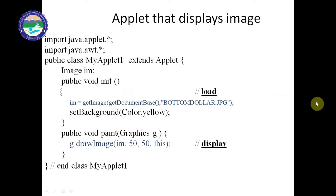This is the program related to image loading and displaying the image. You can see step number one to load the image and step number two to display the image. The program starts with import java.applet.* and import java.awt.*. We always write these two import statements for Java applet programs. Then we write public class MyApplet1 which is extended by the Applet class.